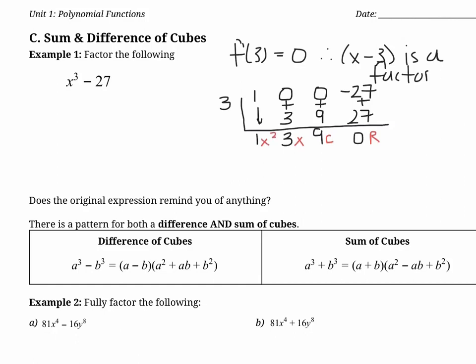So we know this is our remainder — which should be 0 per the remainder theorem. Our result gives us the constant, the x coefficient, and the x squared coefficient. Factoring this gives us one factor of x minus 3, and when we divided, we got x squared plus 3x plus 9. Can this be factored anymore? Are there two numbers that multiply to 9 and add to 3? No, so this can't be factored further.